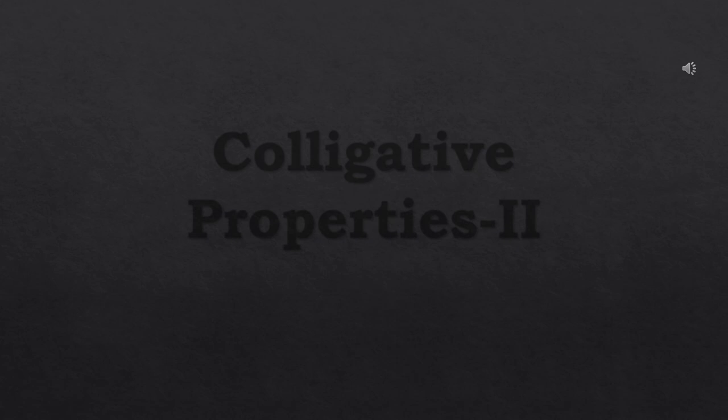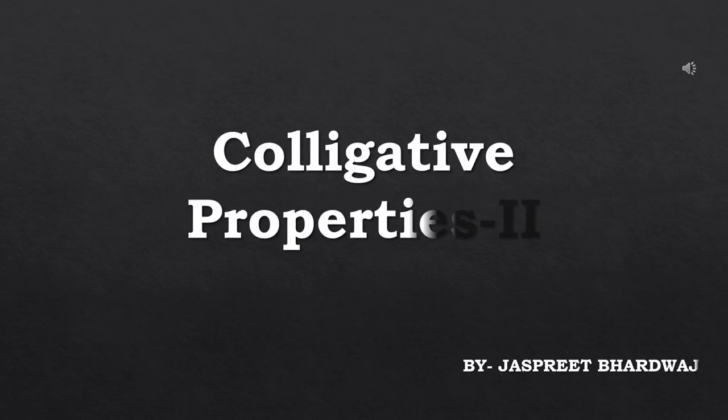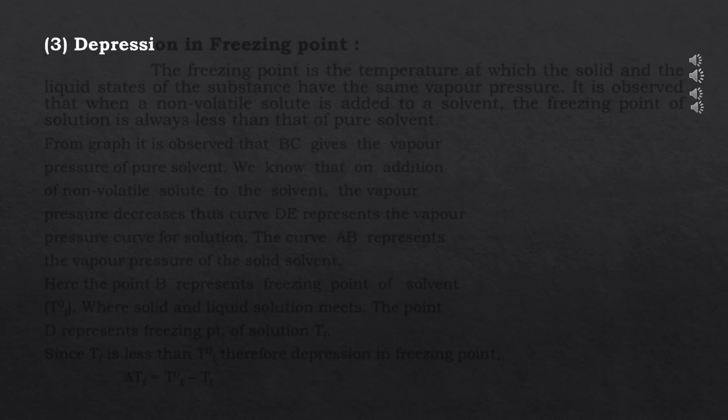Today we are going to discuss the remaining two colligative properties. Our third colligative property is depression in freezing point. First, what is freezing point? In lower classes, freezing point is defined as the temperature at which the liquid freezes. For example, the freezing point of water is 0 degrees Celsius. However, this definition is not sufficient here.